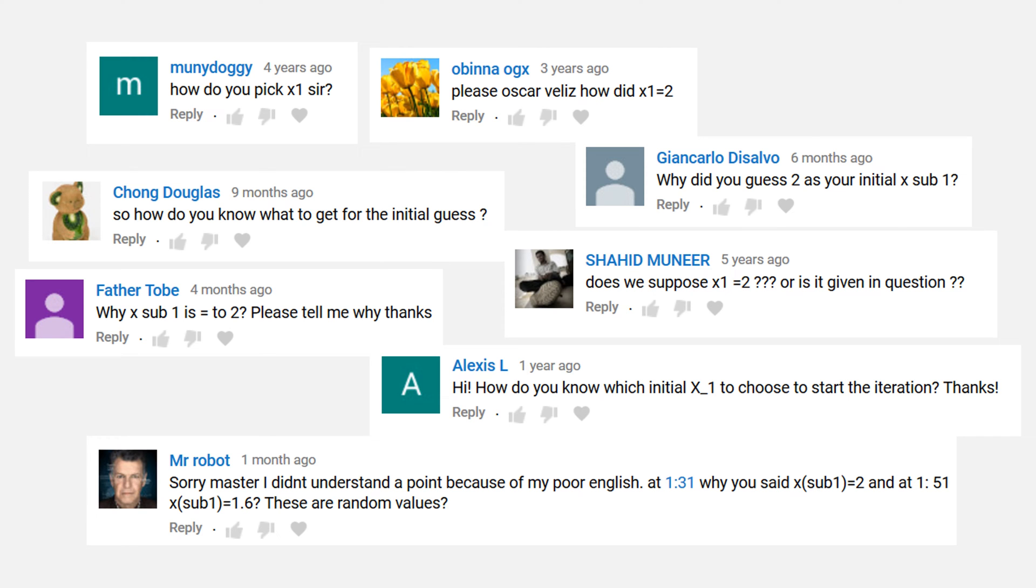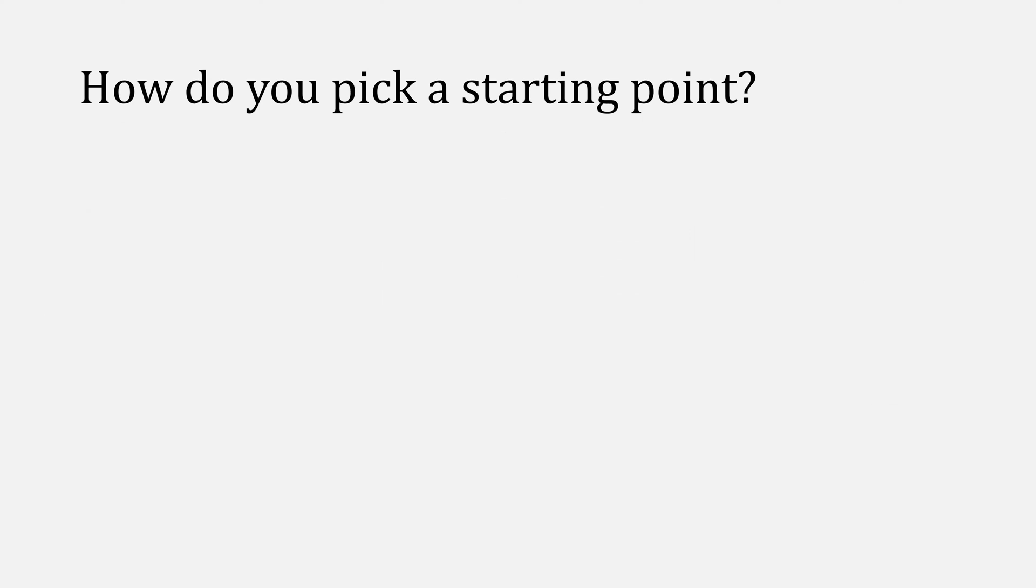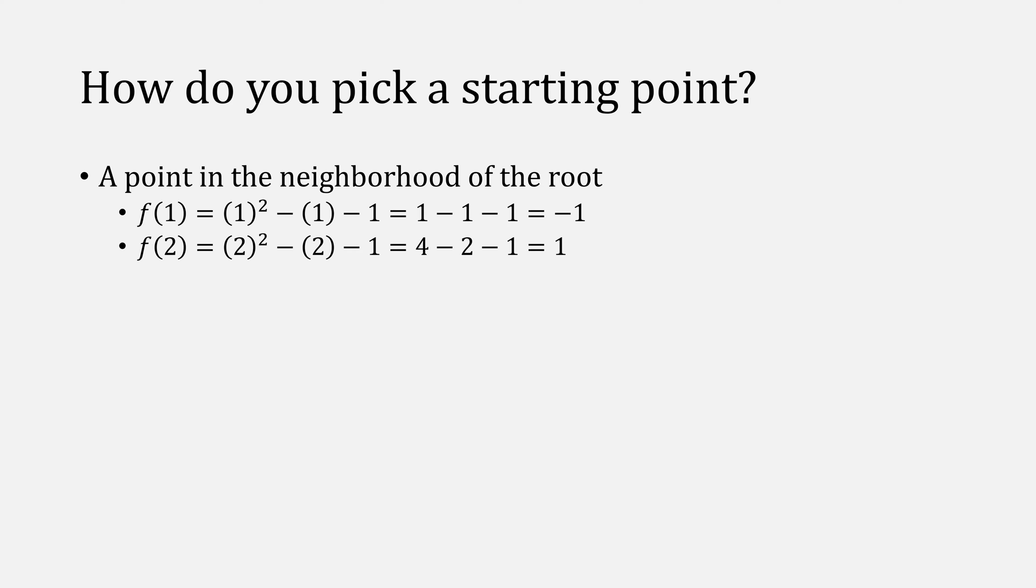Also commonly asked, how do you pick a starting point? The main idea is that you should pick a point that is in the neighborhood of your root. If you plug in 1 inside of our function, we get the value of negative 1. If you plug in 2, we get the value of 1. Therefore, we know our root is somewhere between 1 and 2. You could also try using a root of a similar function, or you can always try graphing the function.